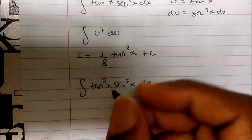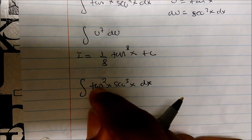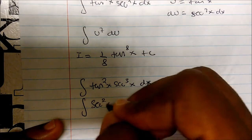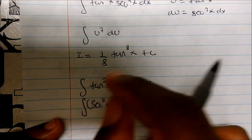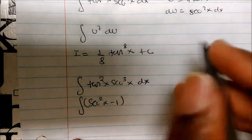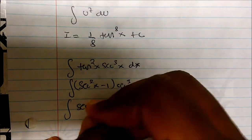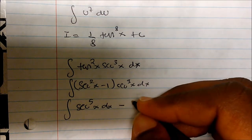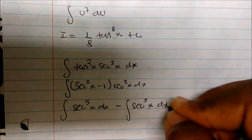And so in this one, actually what we have to do is that we got to split everything up into secant. And so if I look at this, this becomes the integral of secant squared of x minus 1, which I'm using the identity for tangent, times secant cubed of x, dx. And so when I distribute this, this becomes secant to the 5th of x, dx. I'm going to split my integrals up minus the integral of secant to the cube of x, dx.